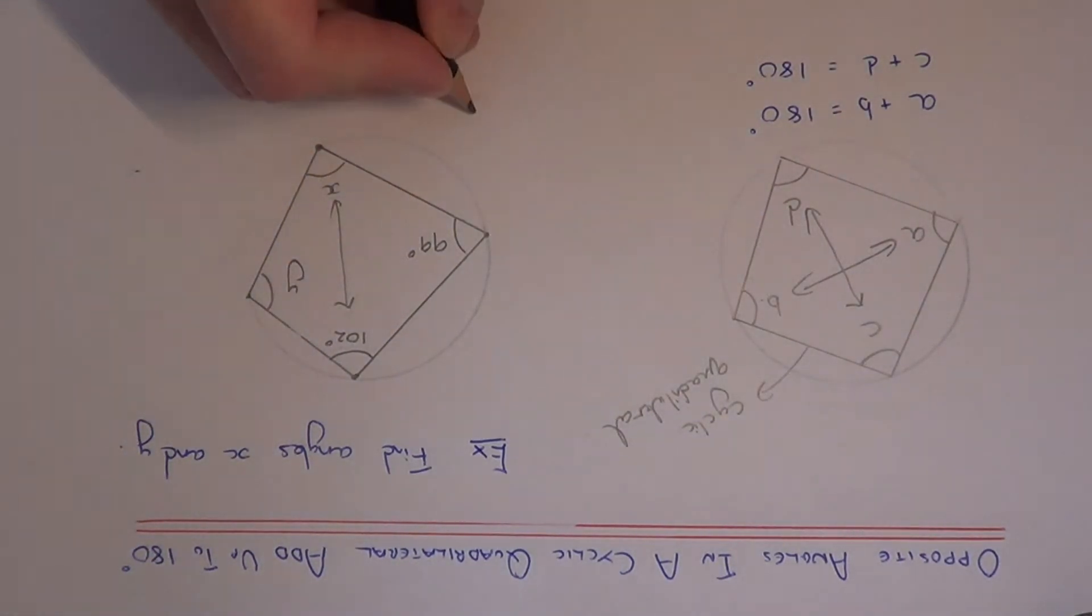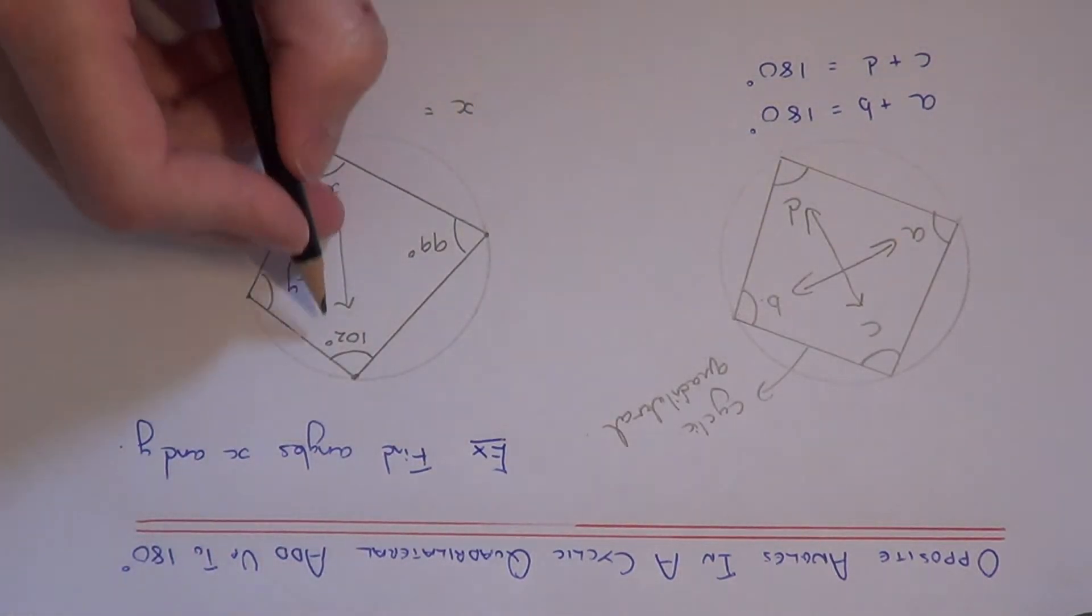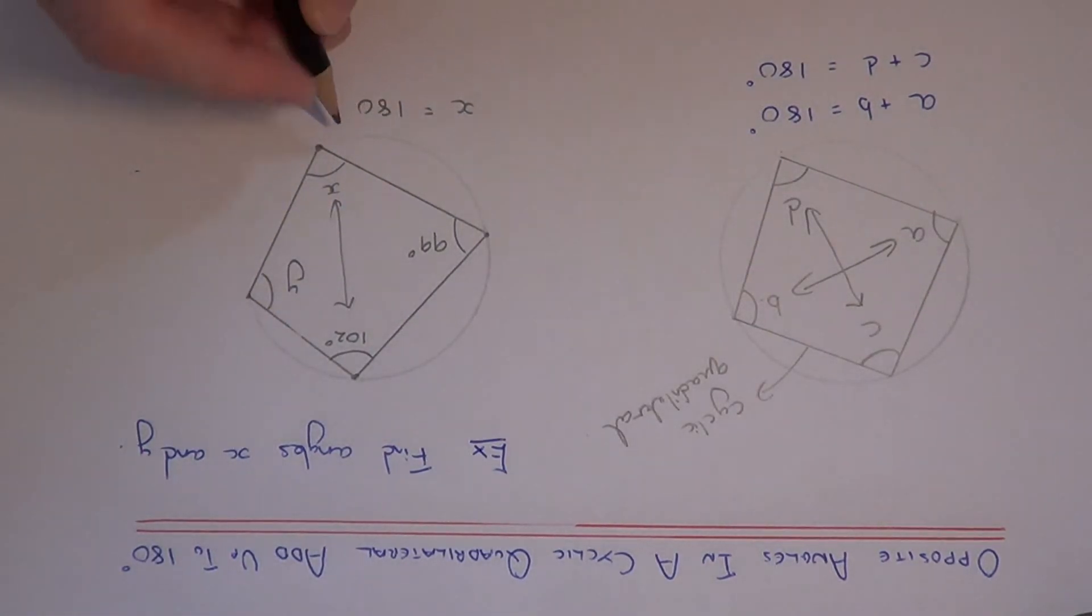So let's work out angle X then. So we just need to subtract the 102 from 180. So this will give us an answer of 78 degrees.